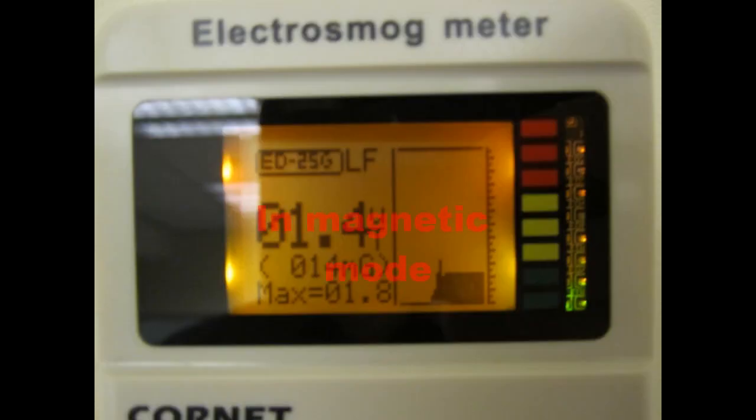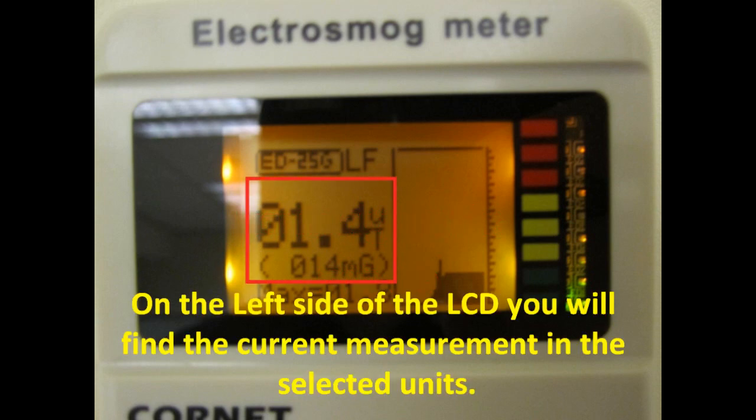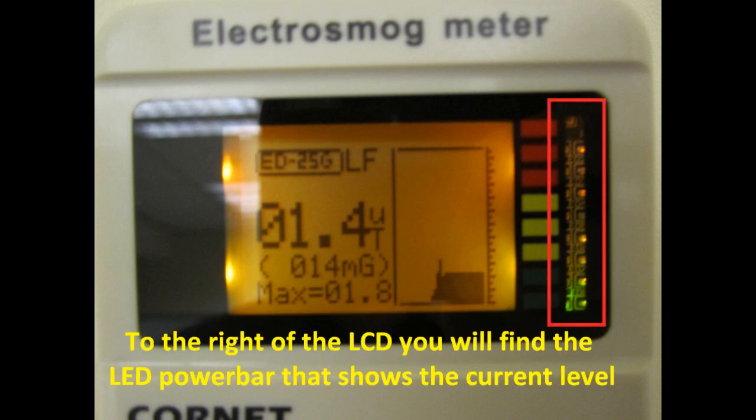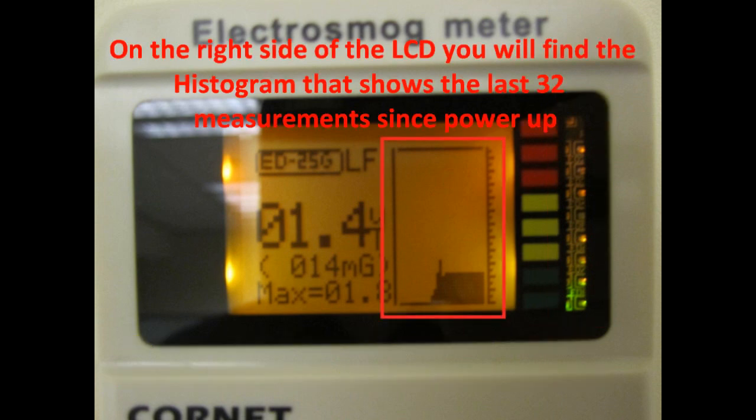The following displays appear in magnetic mode. In the left side of the LCD you will find the current measurement in the selected units. Below it you will see the max value measured since power-up. To the right side of the LCD you will find the LED power bar that shows the current level. On the right side you will find the histogram that shows the last 32 measurements since power-up.